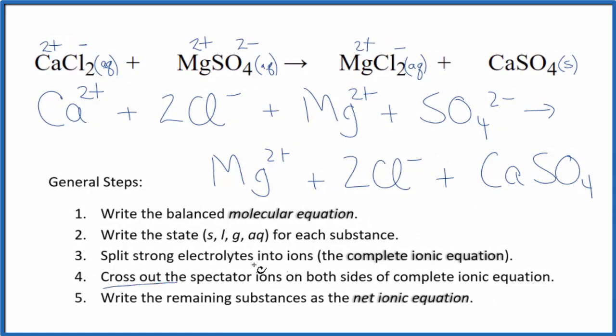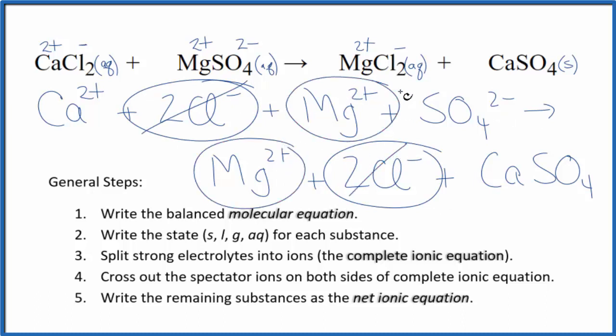Now we'll cross out spectator ions. They're on both sides. They don't really change, so we're not interested in them. So I see here in the reactants, 2 chloride ions, again in the products. I see the magnesium ion here, and in the products. Get rid of that.